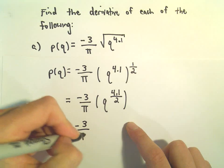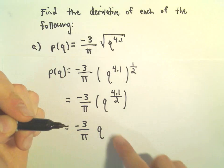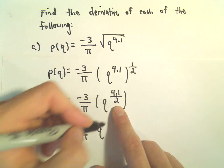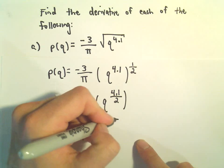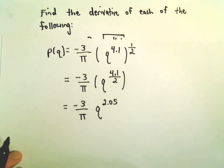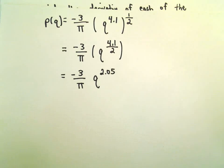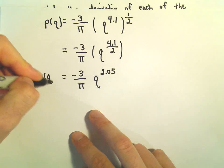So that's negative 3 over pi. And then if we simplify, 4.1 divided by 2 is going to be 2.05. And now I'm kind of in a good place where I think, well, now I'm finally going to take the derivative.